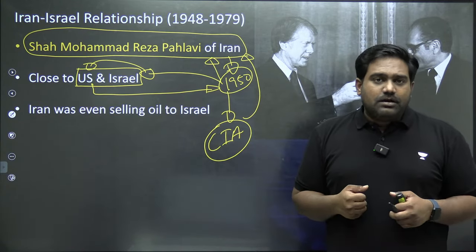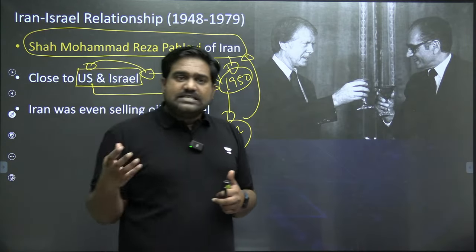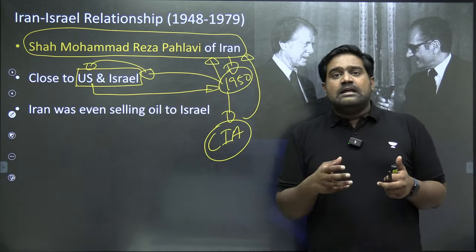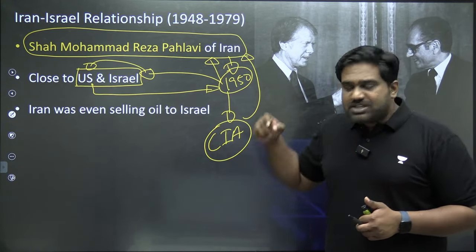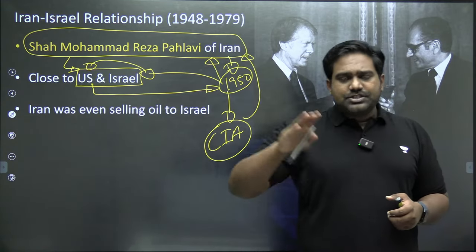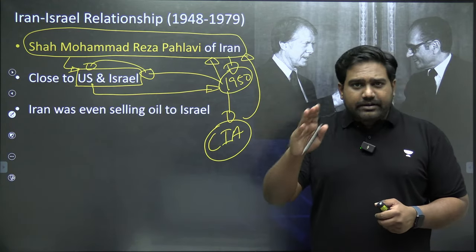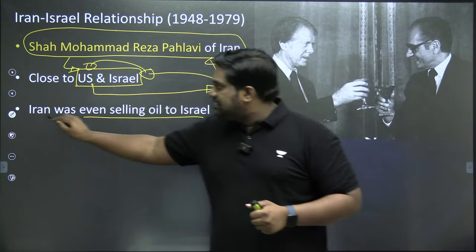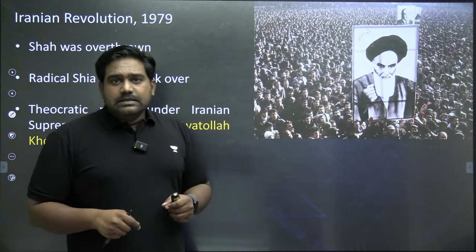This might be shocking for many students, because you would generally have read about Iran-US tensions, how the US has targeted Iran's nuclear program, imposed sanctions on Iran, and how Iran calls for death to America today. But back then, things were very different. There was a pro-US government installed, and it was during this period that Iran was friendly towards Israel. The Shah had reached out to Israel, recognized its independence, and established diplomatic and economic relations. But this was disrupted in 1979 following the Iranian Revolution.